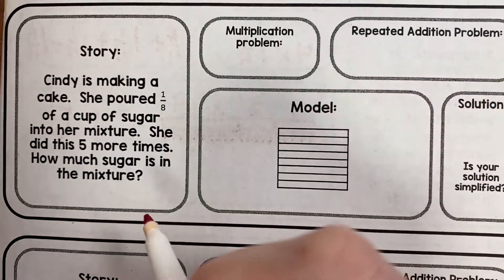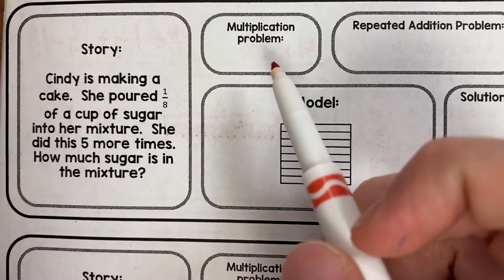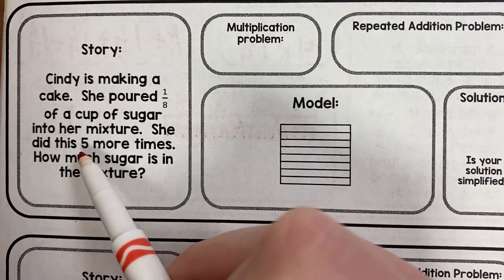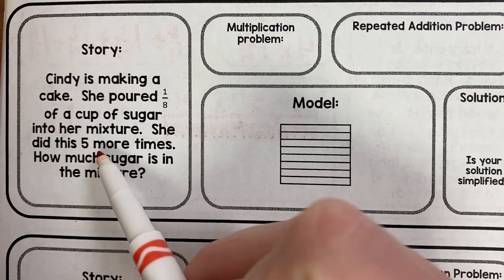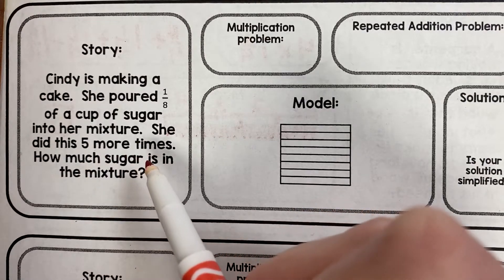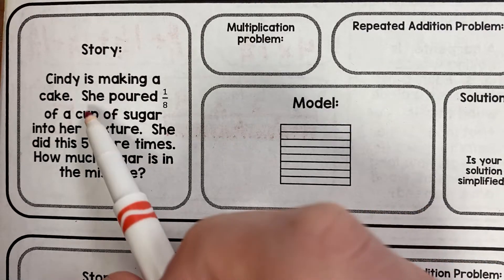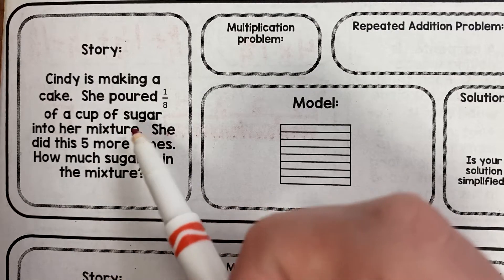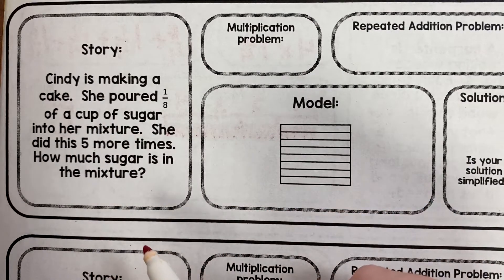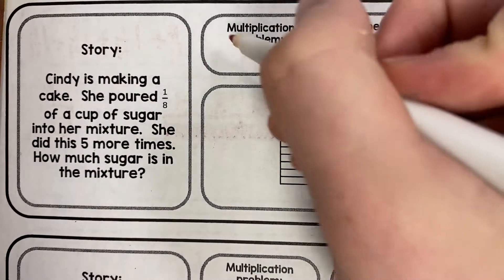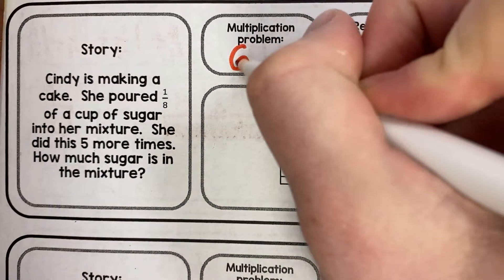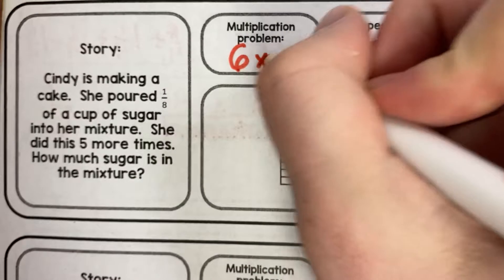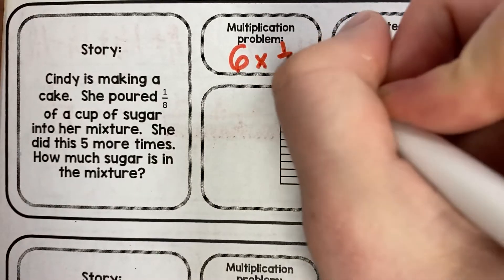If I look at this, first I need to do my multiplication problem. I see the number five because it says five more times, but I also recognize that she already poured one-eighth of a cup of sugar into her mixture and then did this five more times. That shows me that she's actually doing this six times. And again, we're multiplying by a fraction — one-eighth.